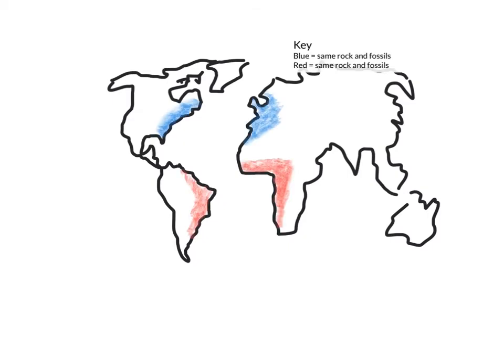Question 2. This map has additional information. Note the key. Considering this additional information, modify your answer to question 1, then record this answer as a separate answer, which will be answer 2 in the discussion. Pause the video.